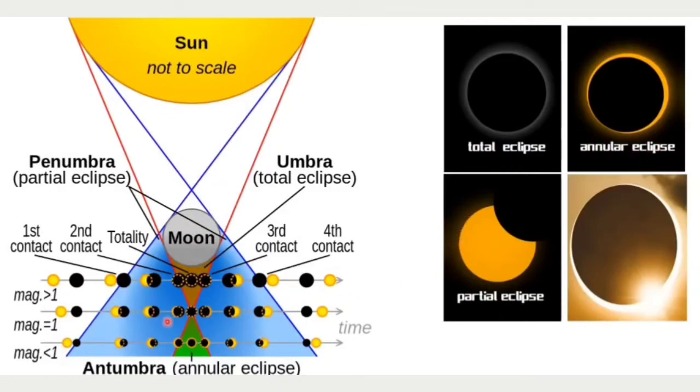Partial eclipse happens in the penumbra region, where the moon's shadow is partially covering the sun. But this diamond ring phenomenon, when does it happen?